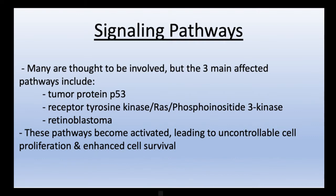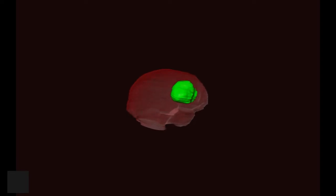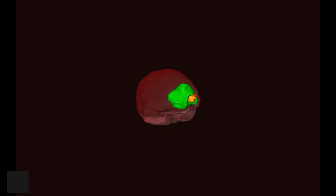Now that we know a little bit about glioblastomas, I'm going to show you 3D images that I rendered from 2D T1 MRI scans. My hope is that by seeing these tumors in 3D context, you may better appreciate the pathology. In this specific dataset, the brain has been colored red, the tumor itself is green, and the cystic component is orange.